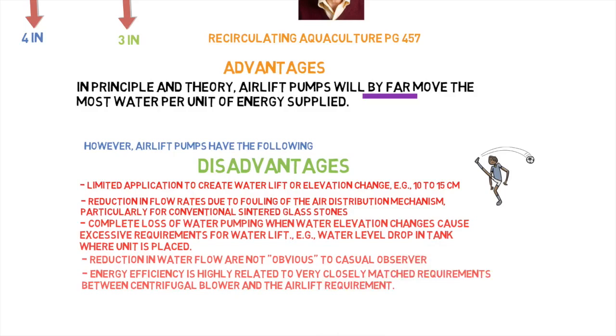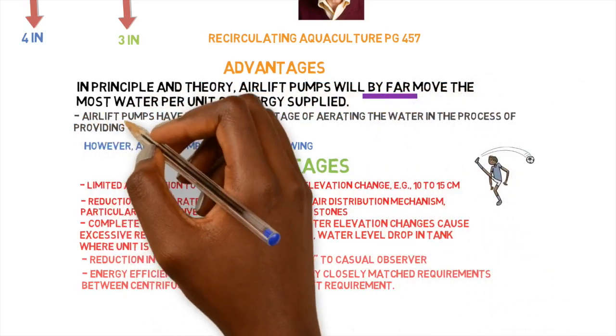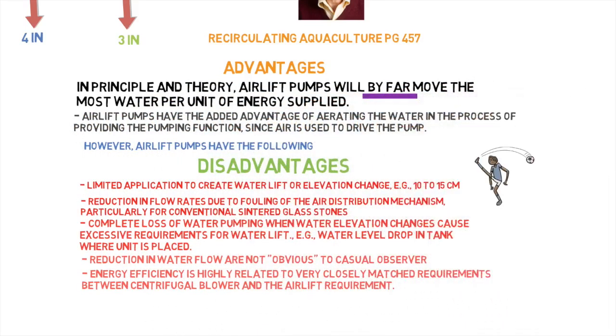Actually, there's one more pro that I've found on the next page of the book. Airlift pumps have the added advantage of aerating the water in the process of providing the pumping function since air is used to drive the pump. And this is very important. I believe this is a good pro right here as well, because if you can add aeration in there along with pumping, that's a two-in-one combo right there. And it also contributes to carbon dioxide stripping, getting rid of a lot of the carbon dioxide that builds up inside of the system.